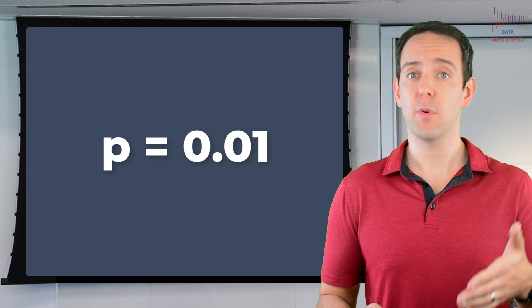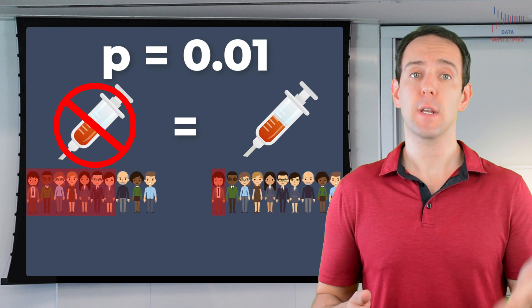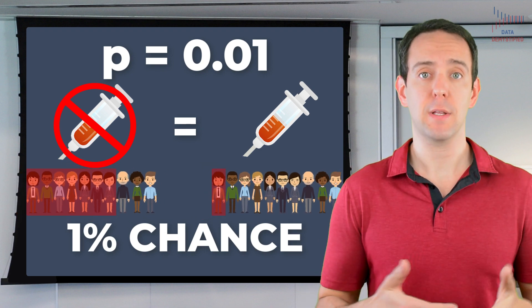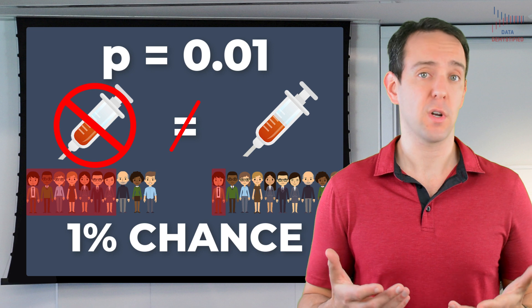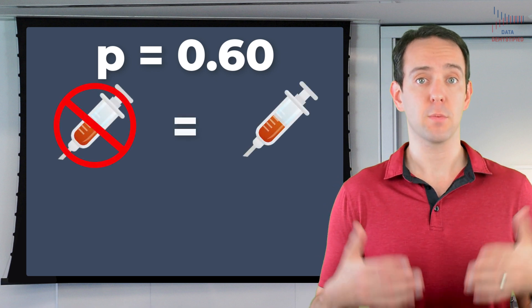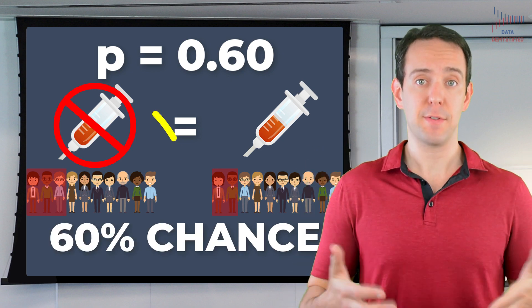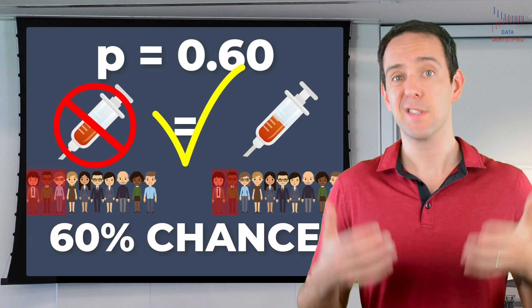Getting a bit more precise, that p-value has a very specific meaning. A p-value of 0.01 means that if the null hypothesis were true — if the drug really doesn't work at all — the chances of getting the result that we did, or one even stronger, is only 1%. Given what we observed, the much more likely case is that the null hypothesis is actually false. On the other hand, a p-value of 0.60 means that if the null hypothesis were true, the chance of getting our result is a whopping 60% — so it's very likely the null hypothesis is true, because we'd expect to see this result 60% of the time even when the drug does nothing at all. As p-values get smaller, we increase our confidence in rejecting the null hypothesis.